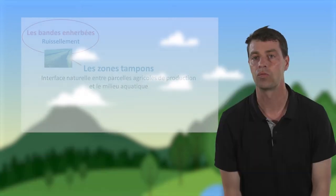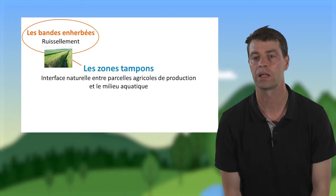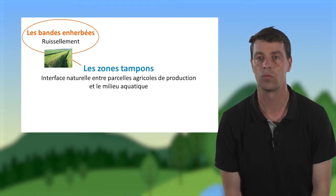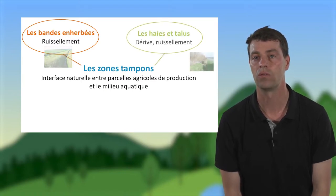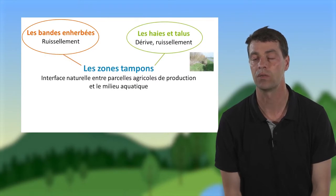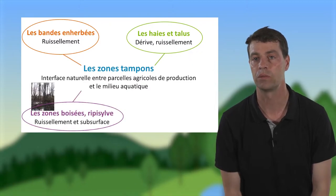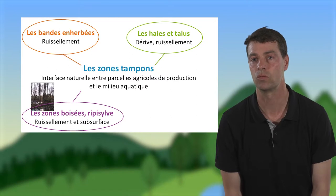Les zones tampons sont des interfaces naturelles entre parcelles agricoles de production et le milieu aquatique. Nous avons les bandes enherbées, qui sont réglementaires, permettant de réduire le ruissellement depuis les parcelles agricoles. Nous avons les haies et les talus, qui permettent de limiter la dérive et le ruissellement de surface. Nous avons également les zones boisées et les ripisylves, qui contribuent à réduire les écoulements de surface et de subsurface.